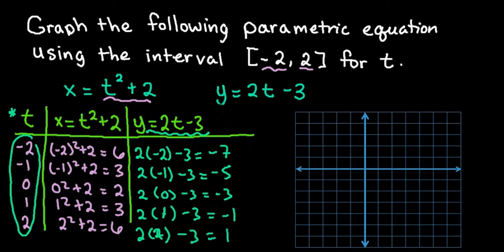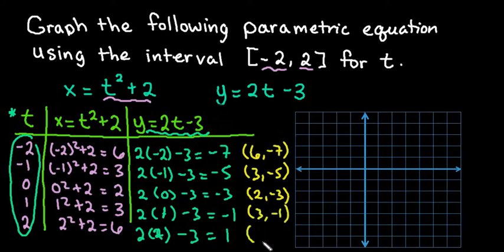So now what we are going to do is take and graph the points 6 negative 7, 3 negative 5, 2 negative 3, 3 negative 1, and 6 comma 1. We're going to ignore t completely when we go to graph. We're just graphing our x, y pairs.